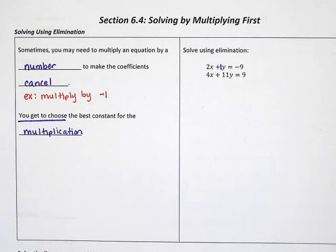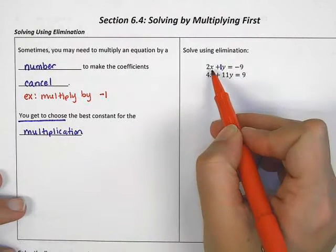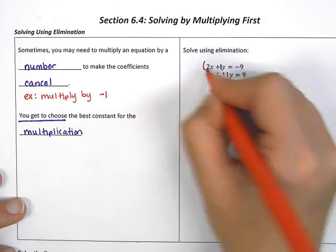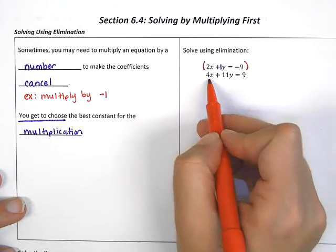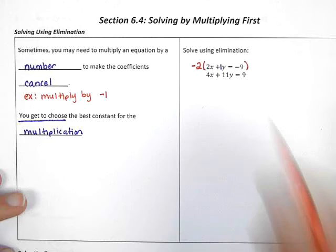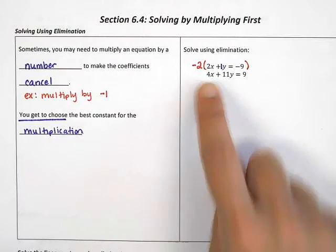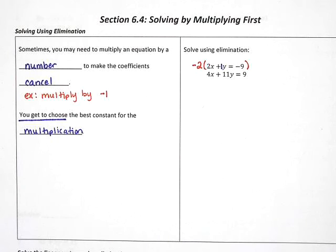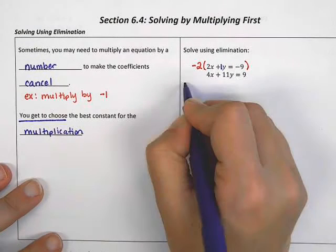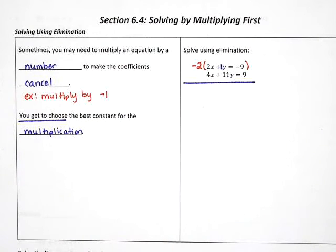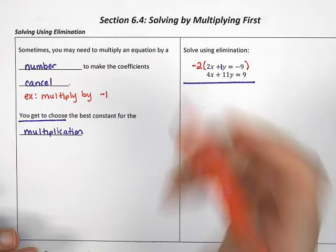What we can do instead is multiply by a different number. For example, I know that I could make the x's cancel if the x here became a negative 4. So to make that happen, I could choose to multiply by negative 2. Why am I thinking negative 2? In order to change the 2 to a 4, I would need to multiply by 2. And I need one of the numbers to be negative so that it will cancel. So I'm going to choose to multiply by negative 2.